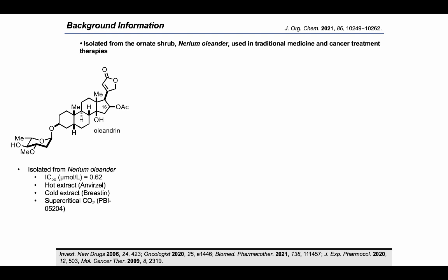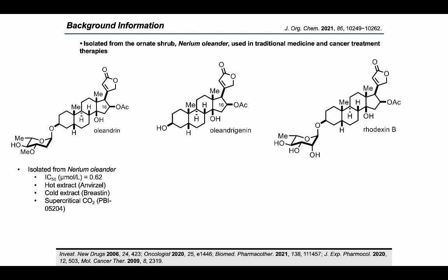Key features of this natural product include a beta-C16-acetoxy substitution and glycosylation with an unusual 2-deoxy sugar moiety. It is also noteworthy that its aglycone, oleandrogenin, is also present in various bioactive natural products such as Radexin B, also known as Tupacinolide.